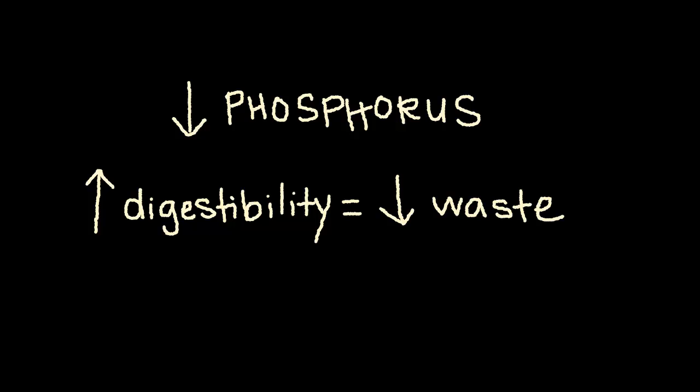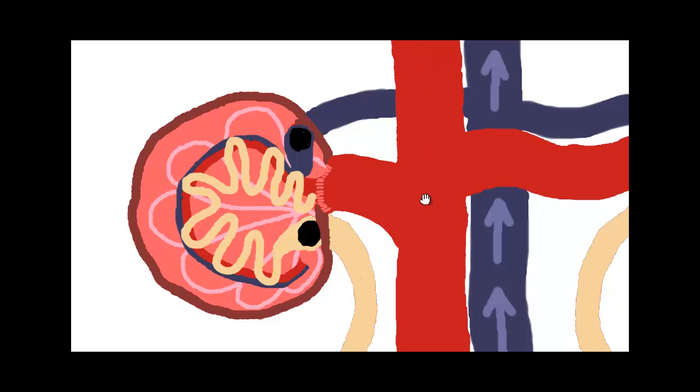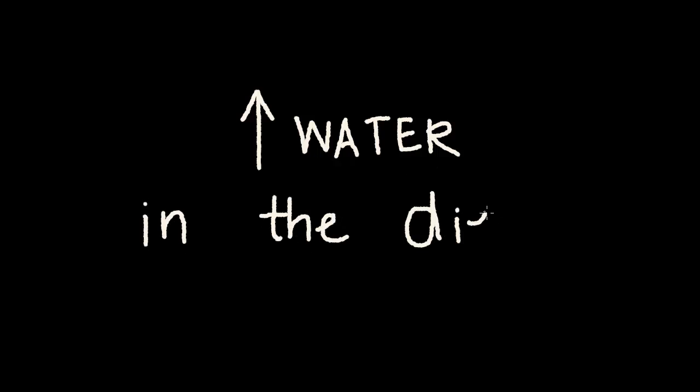What we try to do is increase the filtering of the kidneys as much as possible. We need to increase the amount of blood that flows in and gets filtered. How do we do that? One way is by increasing the water in the diet. The more moisture in the diet, the more volume we'll have in our blood—the water goes into our bloodstream.